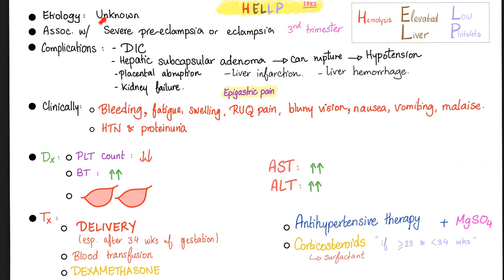Etiology — we have no idea. And when doctors don't have a clue, they give steroids to you, and it works in many cases. HELLP syndrome is associated with severe preeclampsia or eclampsia, occurring in the third trimester. What's the difference between preeclampsia and eclampsia? Let me know the answer in the comment section.